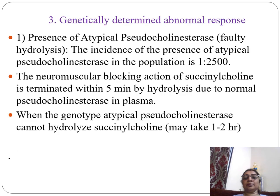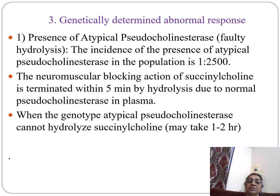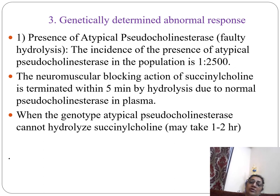Genetically determined abnormal response: the presence of atypical pseudocholinesterase in the blood has an incidence of 1 in 2500 in the population. Normally, the neuromuscular blocking action of succinylcholine is terminated within 5 minutes by hydrolysis due to normal pseudocholinesterase in the plasma. When the genotype has atypical pseudocholinesterase, it cannot hydrolyze succinylcholine, and the action lasts 1 to 2 hours, causing toxicity due to prolonged neuromuscular blockade.